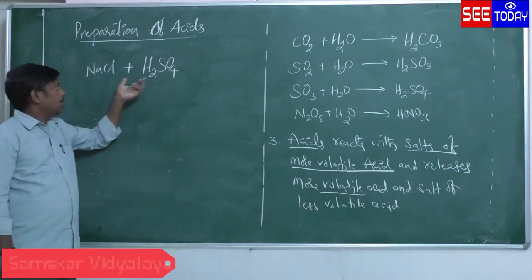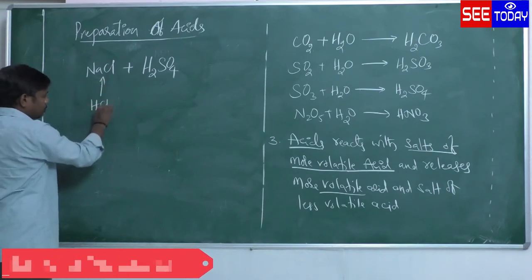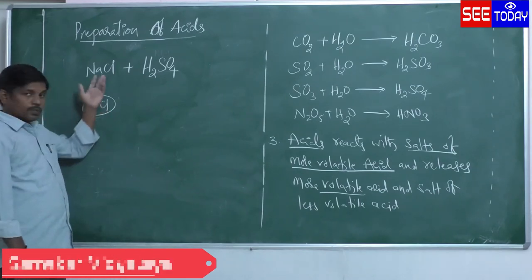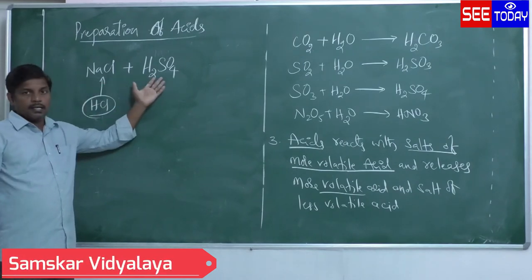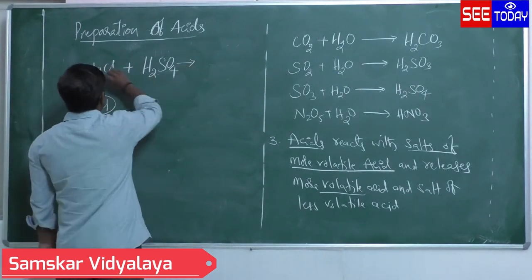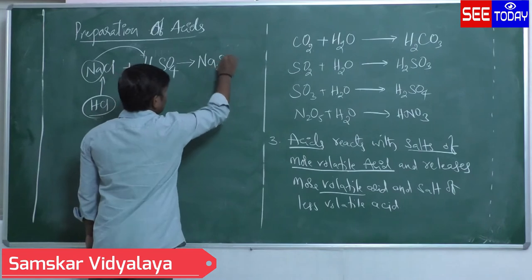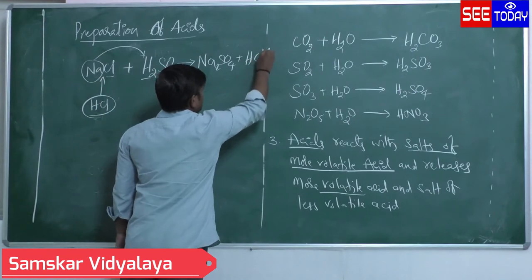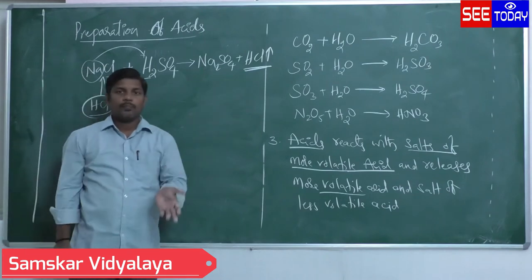HCl is a more volatile acid, so NaCl is the salt of a more volatile acid, and H₂SO₄ is a less volatile acid. On reaction between the two, sodium replaces hydrogen to form Na₂SO₄, and chlorine and hydrogen combine to form HCl. HCl is a volatile acid, so it evaporates.